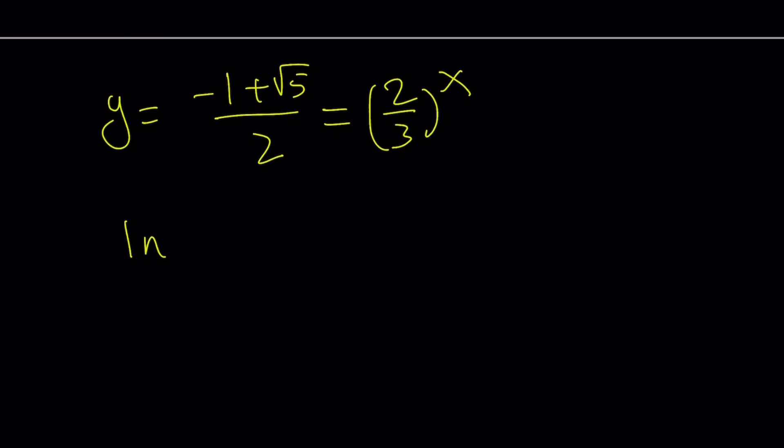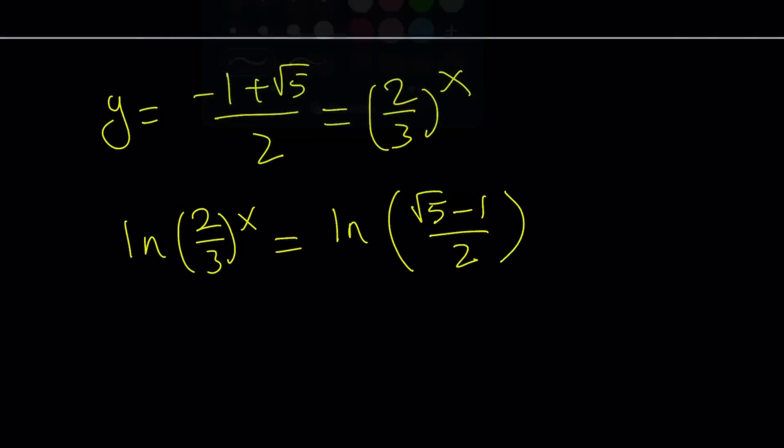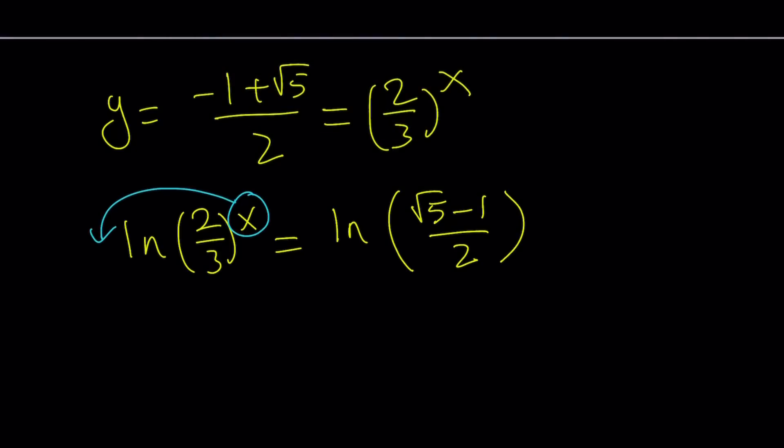We're going to bring down the exponent. Let's take the natural log of both sides. We can bring this x to the front. Now we have x times ln 2 thirds equals ln of square root of 5 minus 1 over 2.